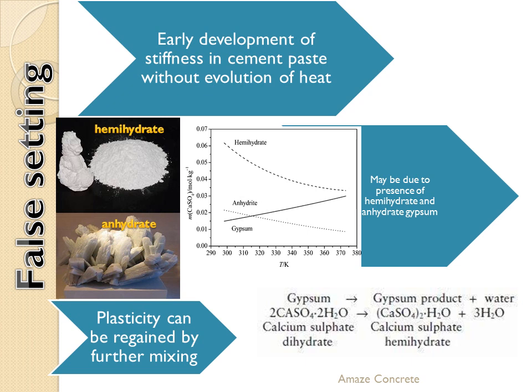With a plasticizer or superplasticizer of retarding type, you can mix with concrete and regain that plasticity. However, depending upon the type of retarder admixture used, the setting of concrete can be affected. So it is not a desirable property of cement, concrete, or mortar.